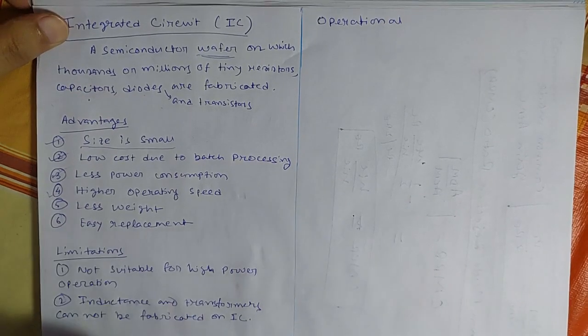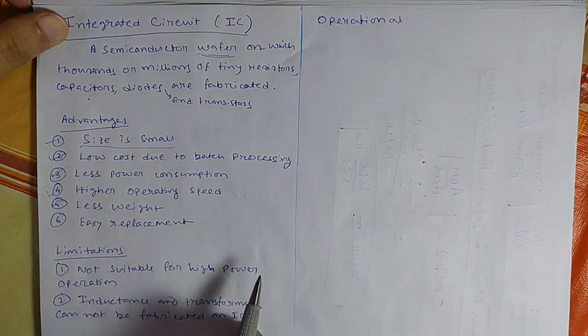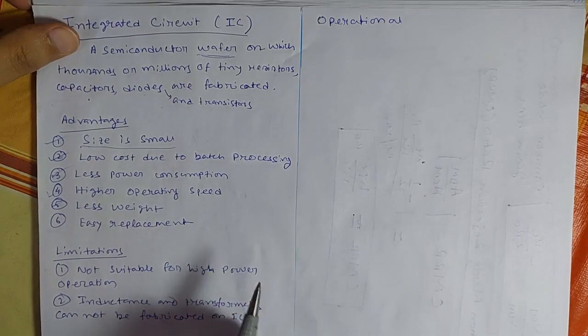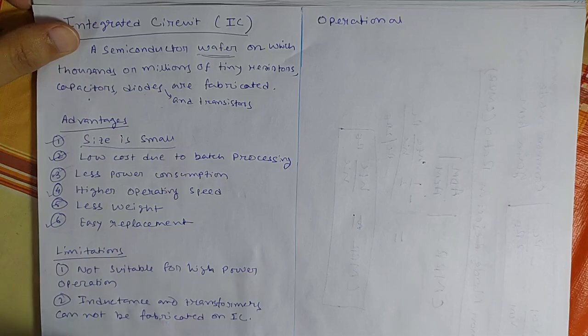Fourth one is higher speed of operation. Fifth one is less weight because of the small size. Weight is also less and you can easily replace the IC.